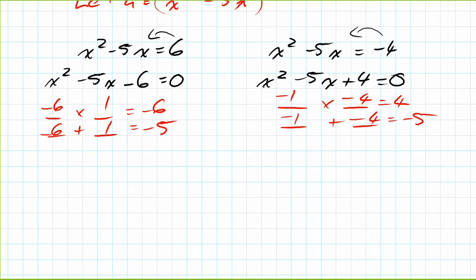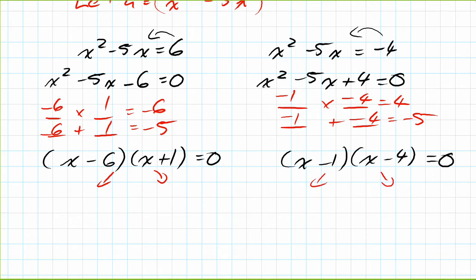So when we go to factor this, we get (x - 6)(x + 1) = 0, and then the other one we get (x - 1)(x - 4) = 0. Same as above, we split again, and we're going to do it in both equations, so we're working with two at the same time here. x - 6 = 0, x + 1 = 0, x - 1 = 0, and x - 4 = 0. It's a lot going on.